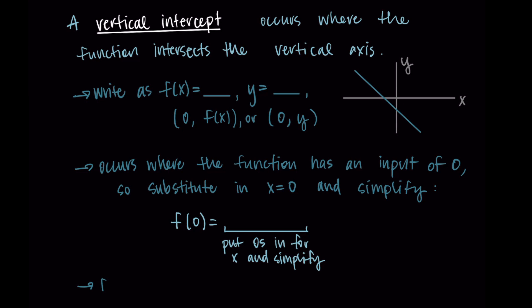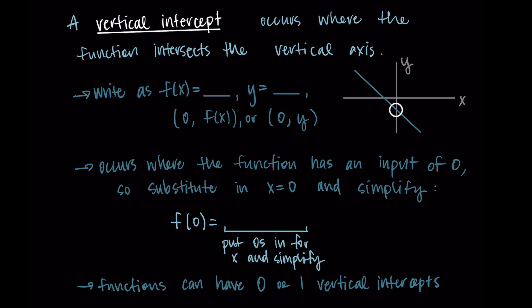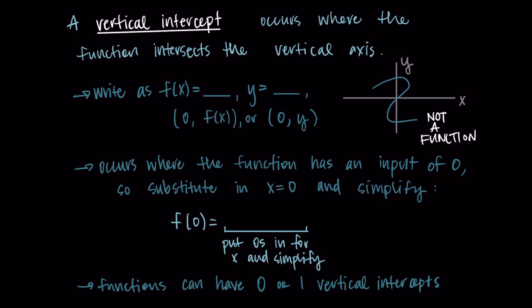A function can only have zero or one vertical intercepts. We could have a function with no vertical intercepts, but we are not able to have multiple vertical intercepts. If a graph had many y-intercepts, it would no longer be a function — it would fail the vertical line test, because that input of zero would have multiple outputs. So functions can only have zero or one vertical intercepts.